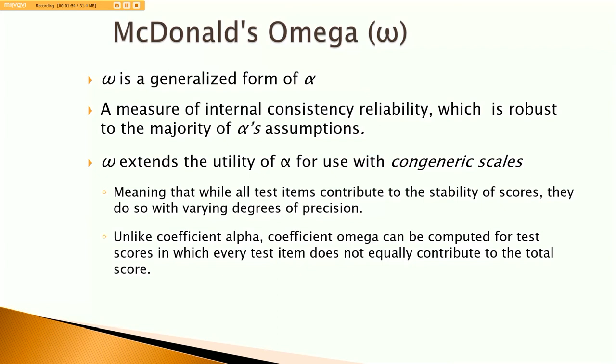At a basic level, what Omega does is it extends the utility of Alpha for use with congeneric scales. In other words, it means that congeneric scales involve that all test items do contribute to the overall reliability or stability of test scores, but they do so in different degrees or in different amounts.